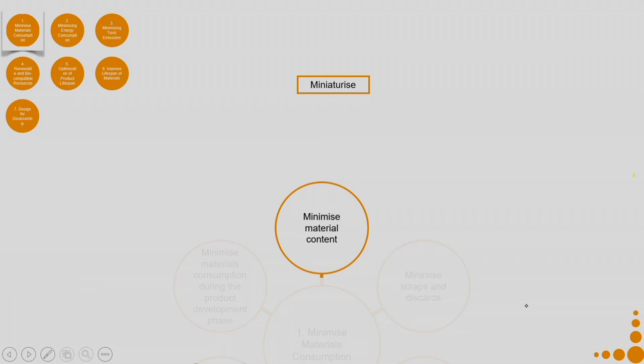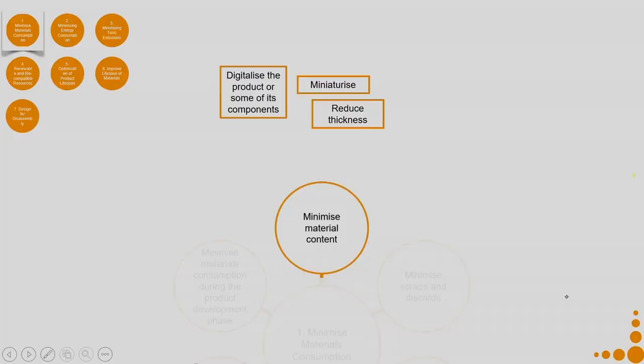Let us go into depth of each of these aspects and see how we can do them. These are examples — do not limit yourself to the sub-criteria. To minimize material content, you can miniaturize certain components or digitalize the product or some of its components to minimize material content.